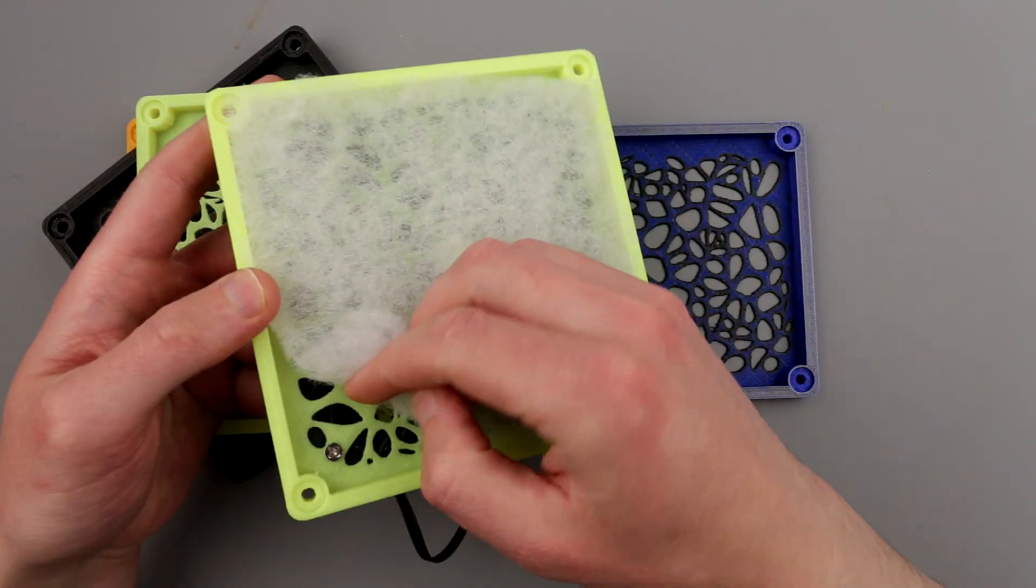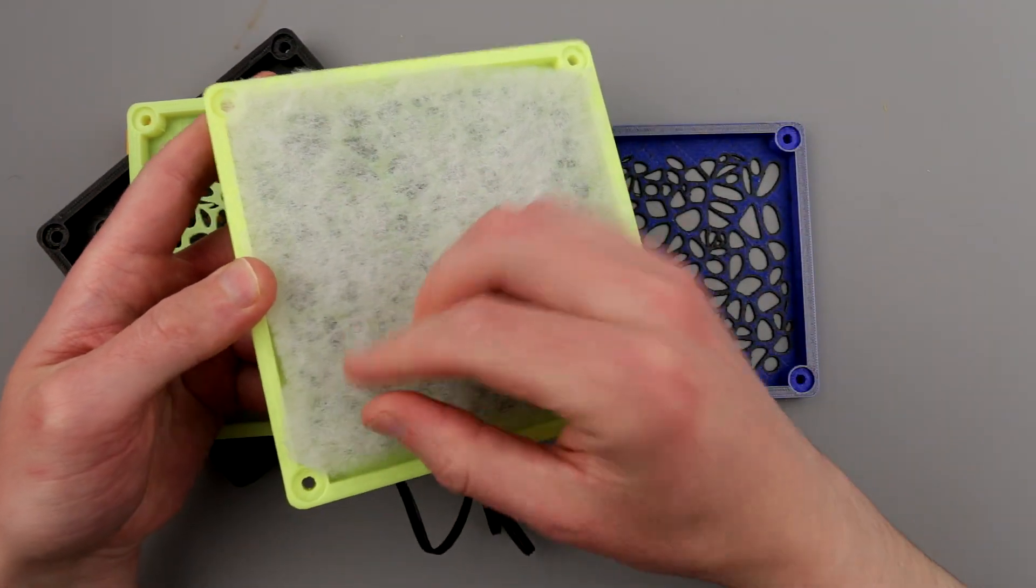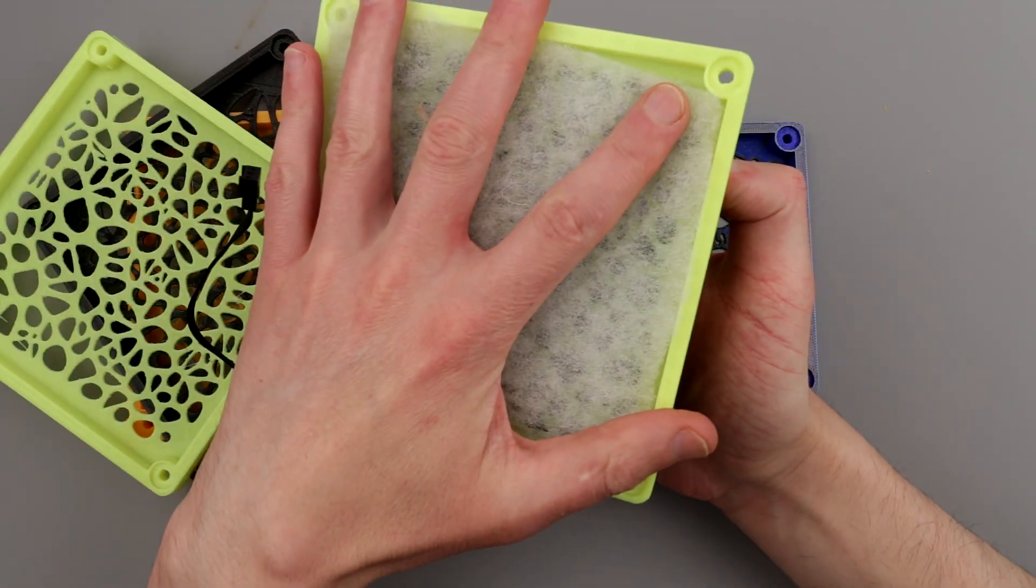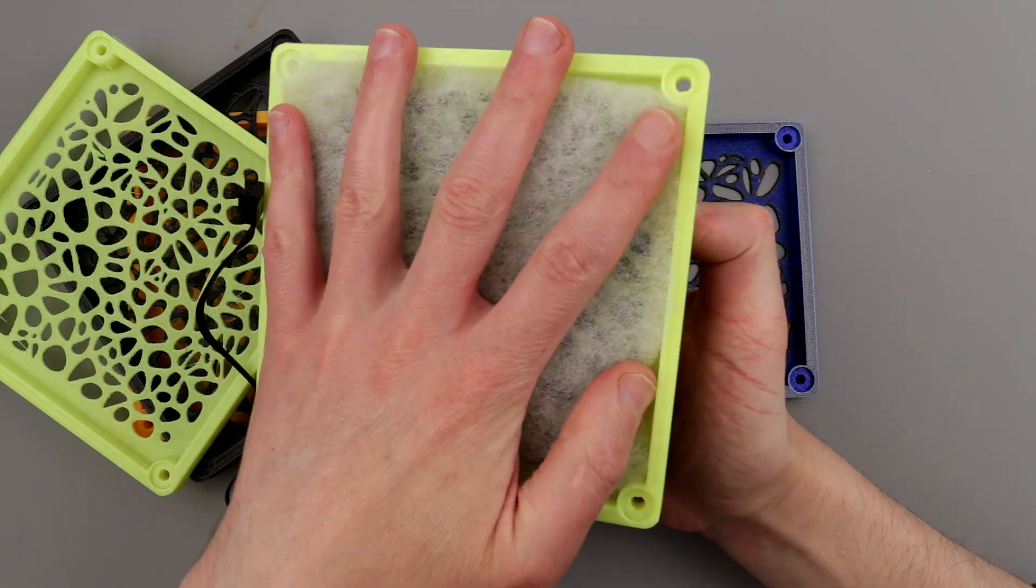You just use the screws to attach your fan, then put your filtering material and use four more screws to attach this contraption to your computer case or panel inside.